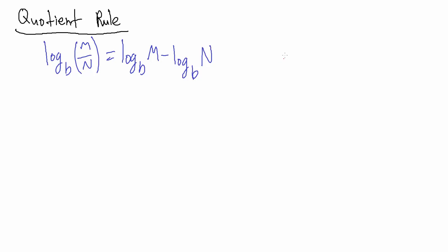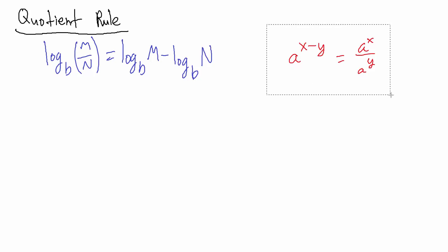Just like the product rule, this actually has an analogous exponential property that says a to the x minus y equals a to the x divided by a to the y. We're actually going to use this fact to establish the quotient rule.